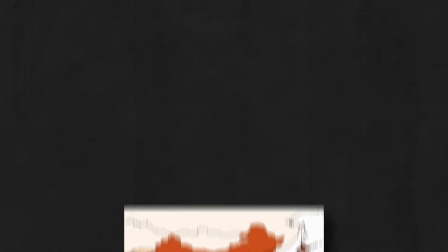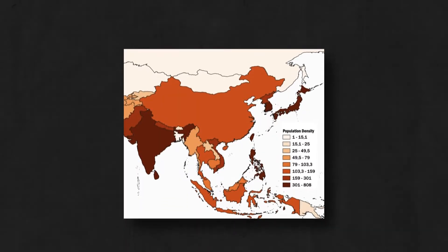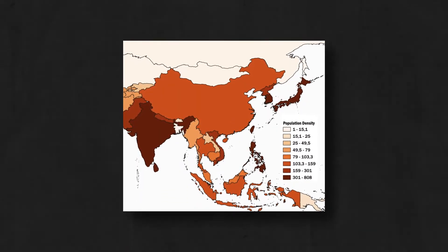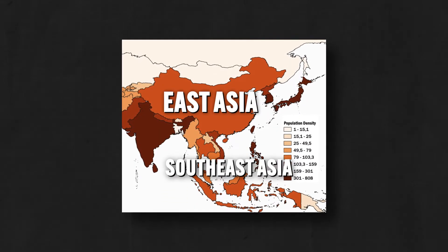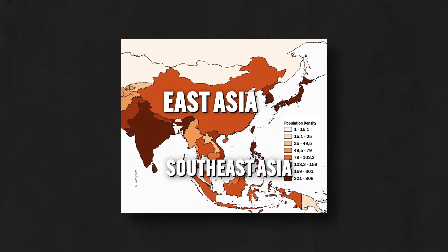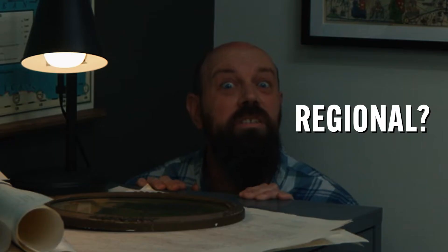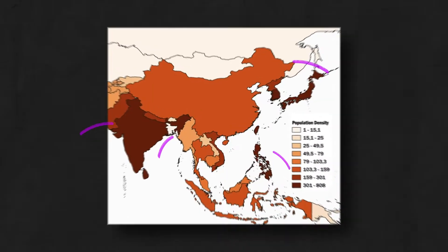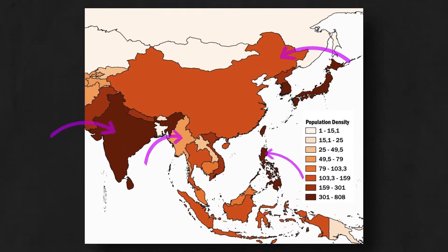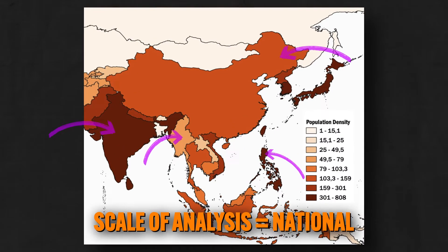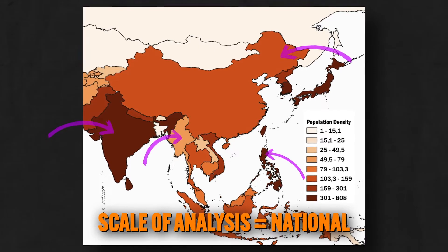One more example: this is a map of East Asia and Southeast Asia — which, in case you don't know, are names of regions. So what scale of analysis are we looking at here? Regional? No, not regional. They've got different countries colored in, so the scale of analysis here is national. So be careful when you're defining the scale of a map, because it can be tricky.